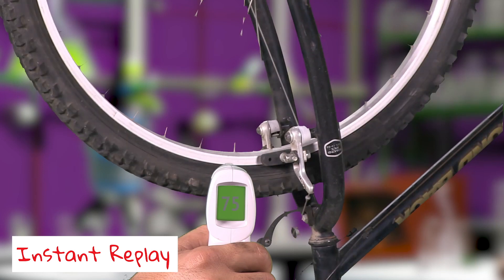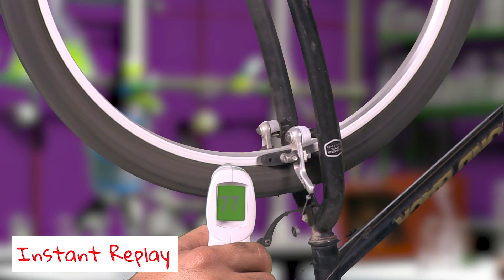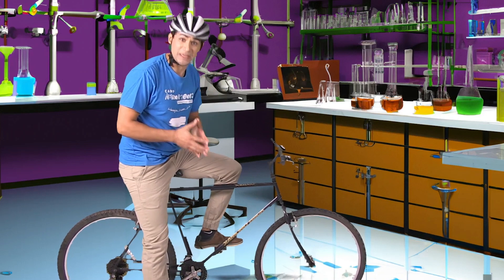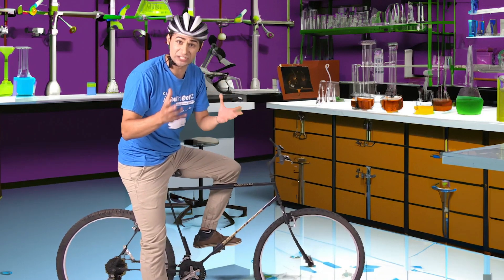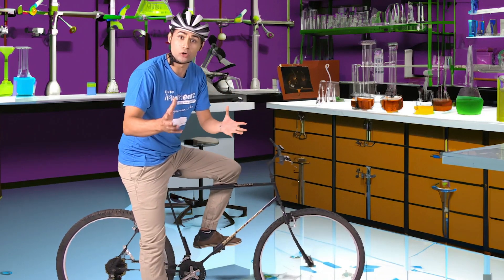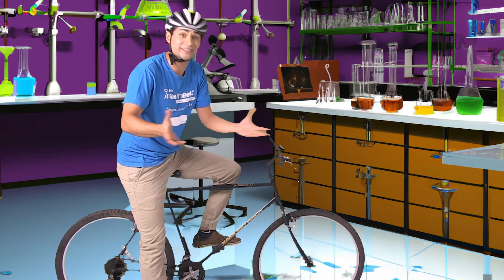Brakes use friction to turn the wheel's motion energy into heat energy. The interesting thing is that while friction slows down movement, it's also needed for the movement to even happen.